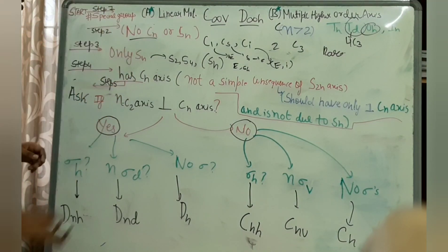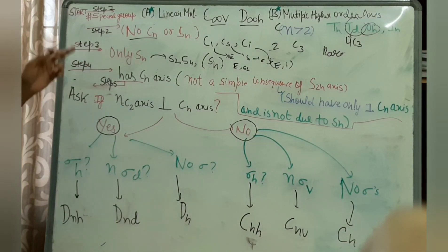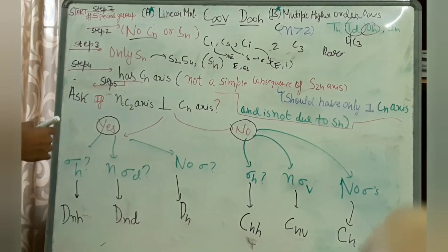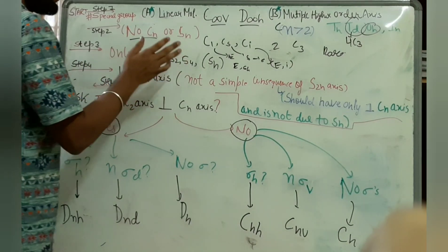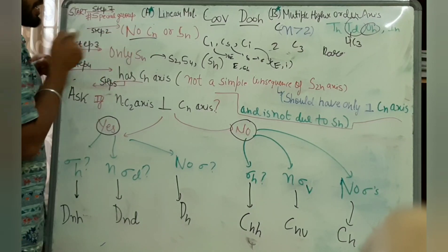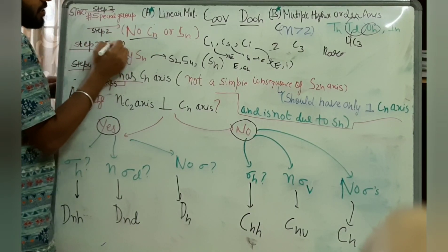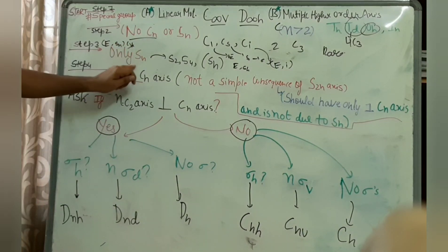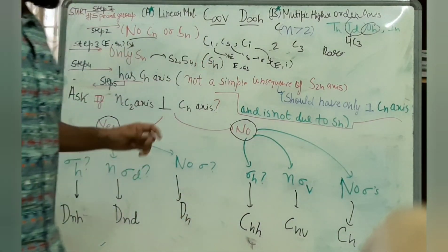Step three: if the molecule doesn't fit those cases but only has an improper axis of rotation — meaning no proper principal Cn axis, just E and some Sn — then it will belong to something called the Sn point group.